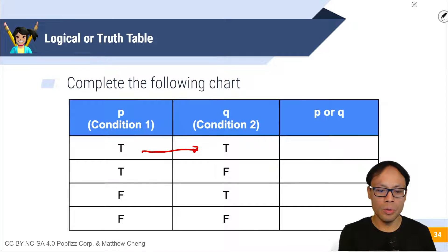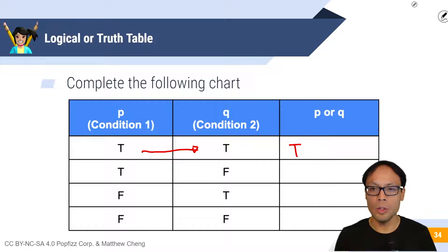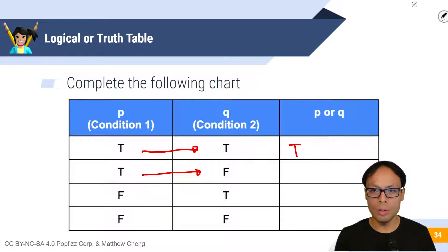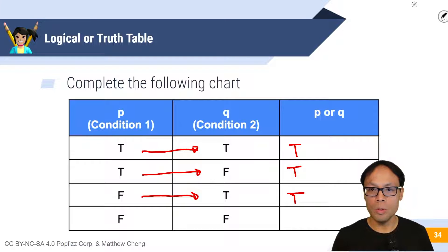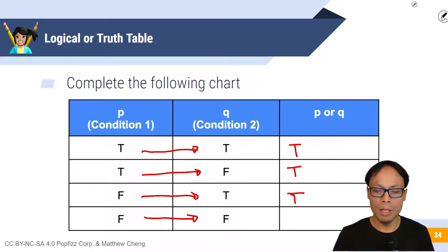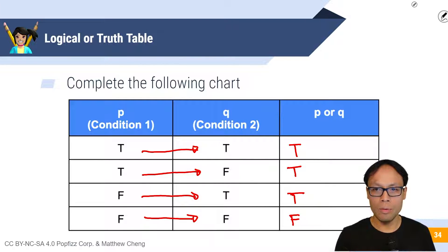In the first line we've got true OR true, and so true OR true is also going to be true. The second line we've got true OR false — one of them is true, so the entire expression is true. The third line we've got false OR true — we've got one true there, so this is also true. And in the fourth line we've got false OR false, and this is the only time that OR is false, because both of the operands are false.